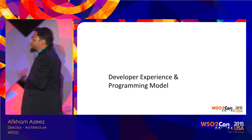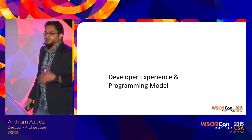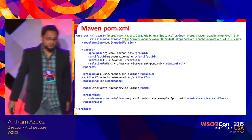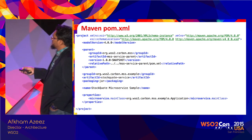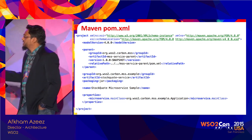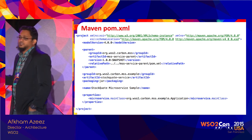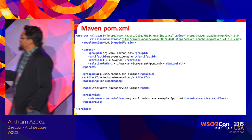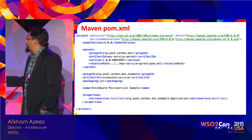Developer experience and programming model: if you want to develop your microservices in Java, we provide the APIs and tooling to do that. Looking at the Hello World service — we have a pom.xml file. It's a Maven project archetype. The parent has to be set as the microservices server parent, which simplifies your pom because all core dependencies are inherited from the parent. You can define your artifact ID, group ID and so on.